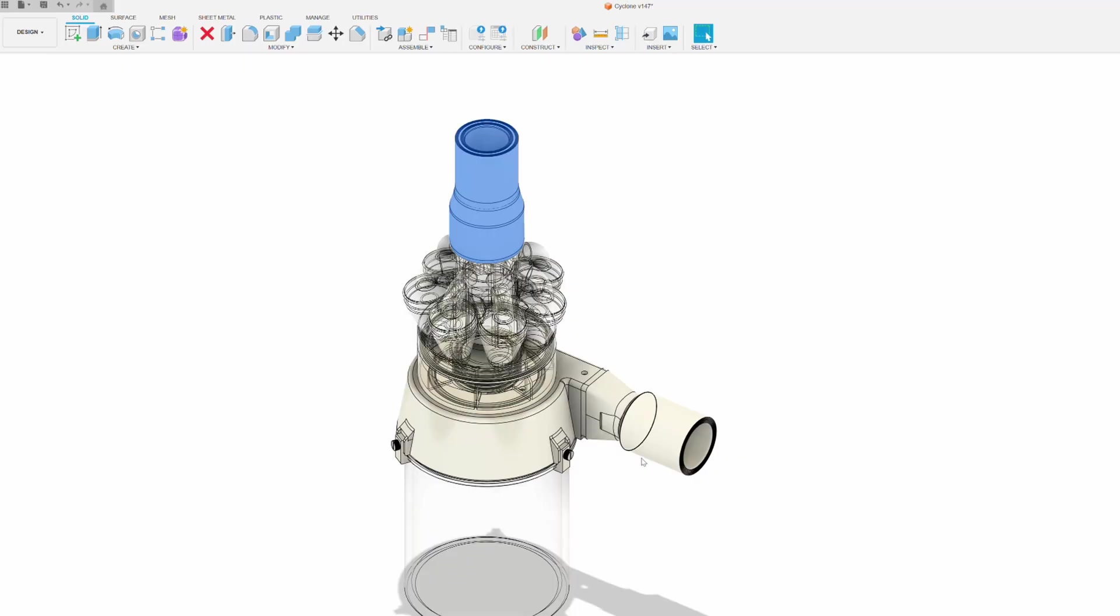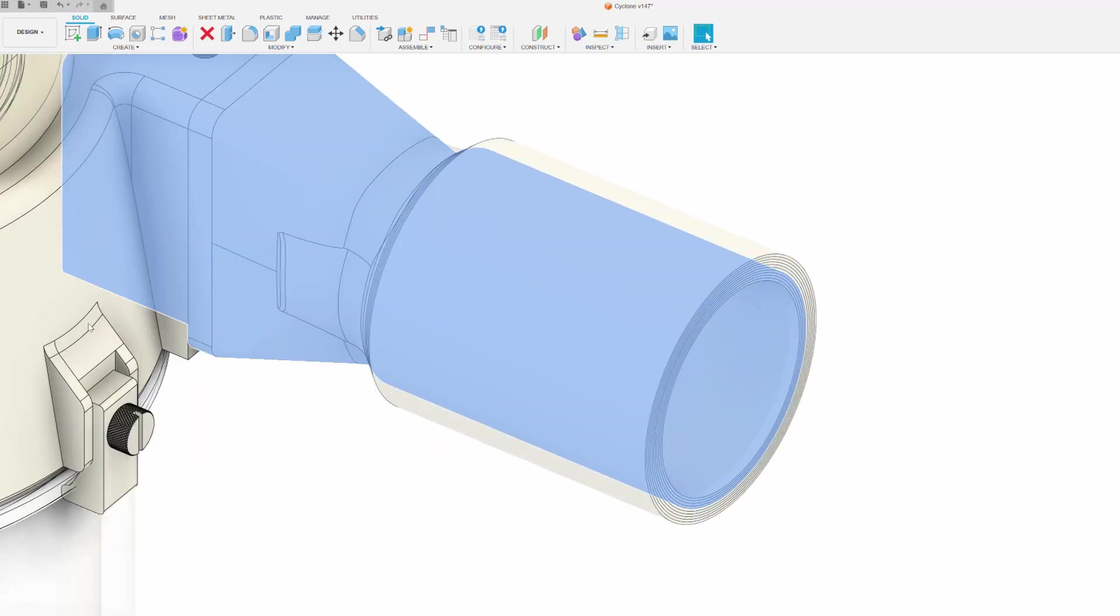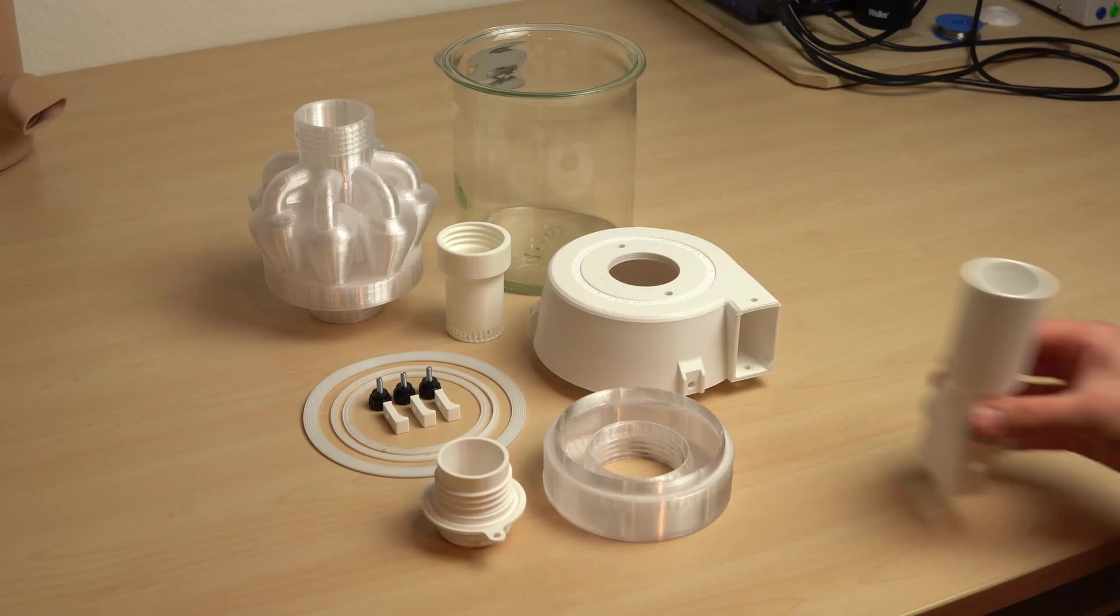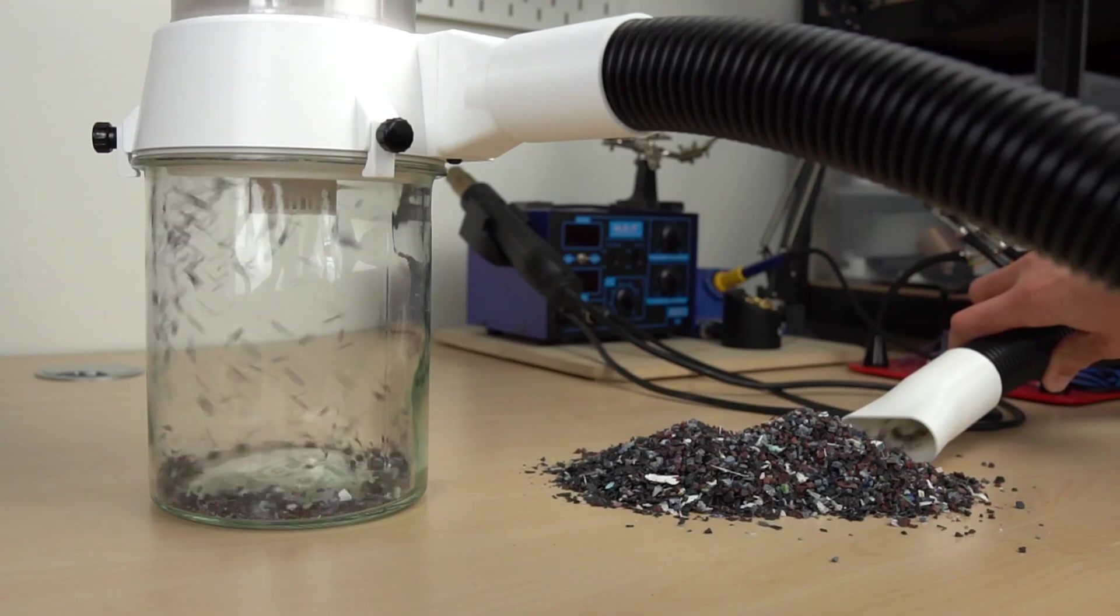This kit also comes with multiple adapter sizes for different vacuum hoses and tubes. So this kit works perfectly fine if you just want to download it, print it and use it like I do in the video.